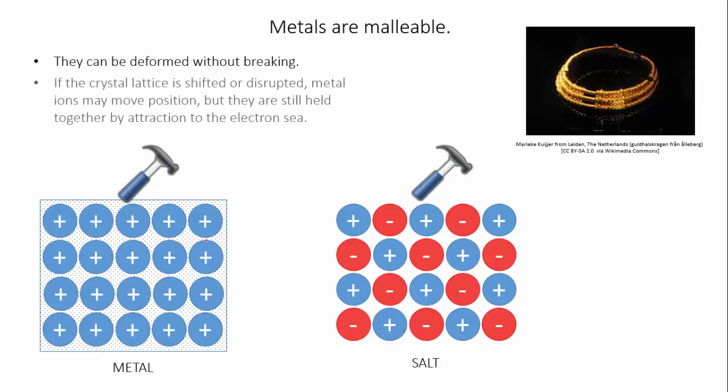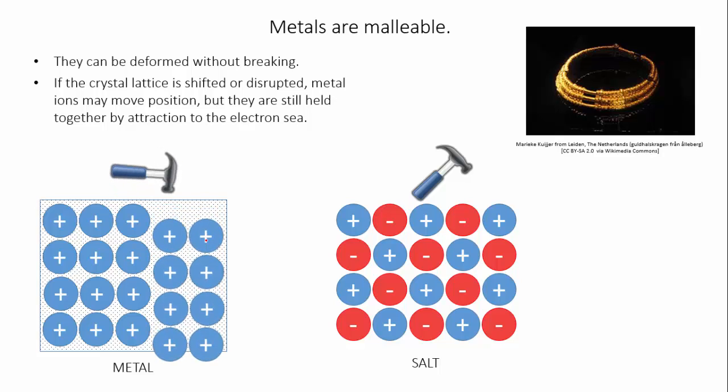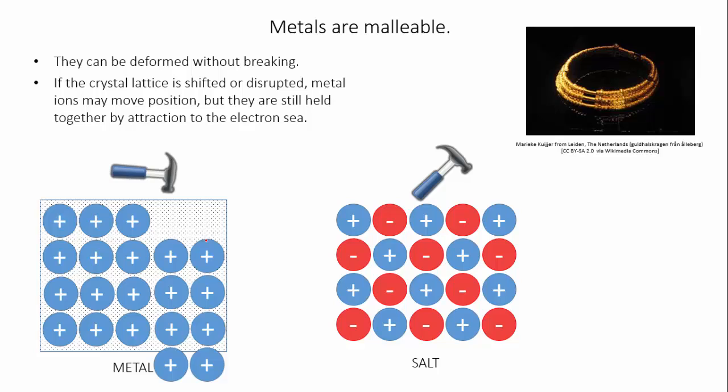The reason for the malleability of metals is that when a metal lattice is disturbed, although the lattice of positive ions may shift out of shape, the sea of electrons is able to flow between the ions and maintain the electrostatic attraction. This allows the lattice to be greatly deformed without it breaking.